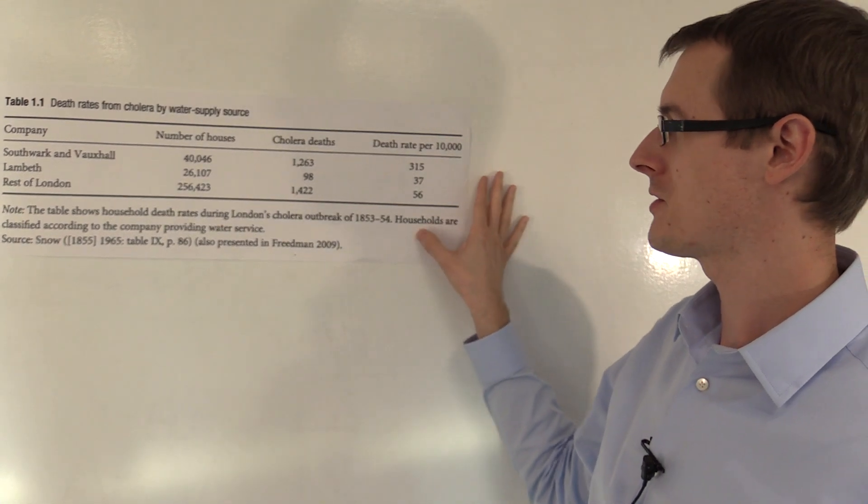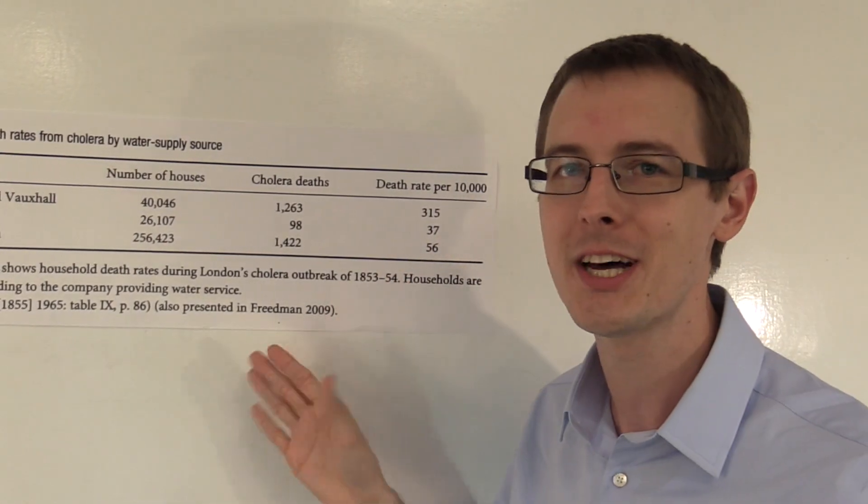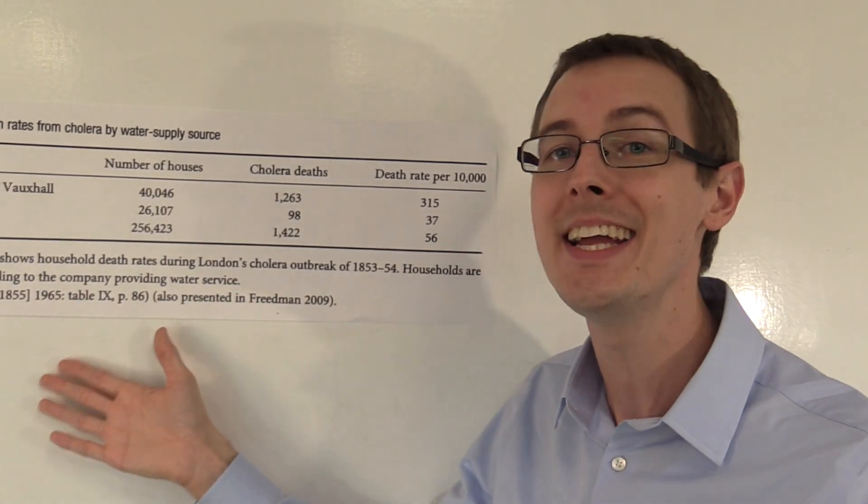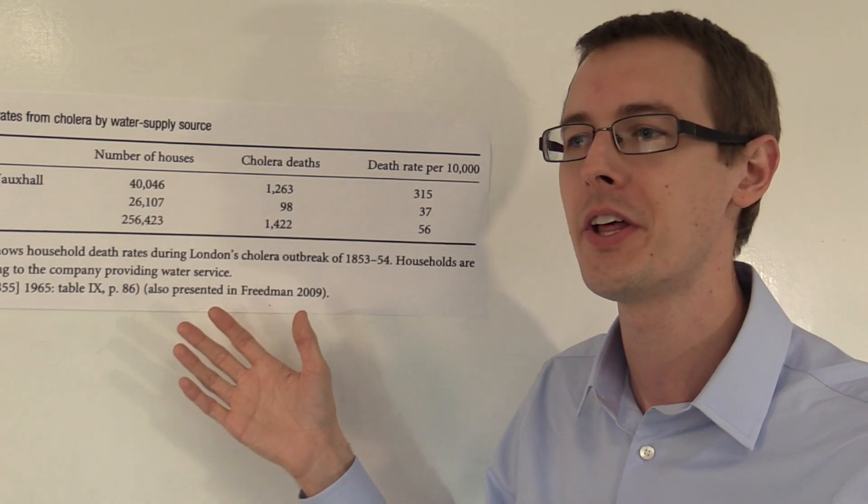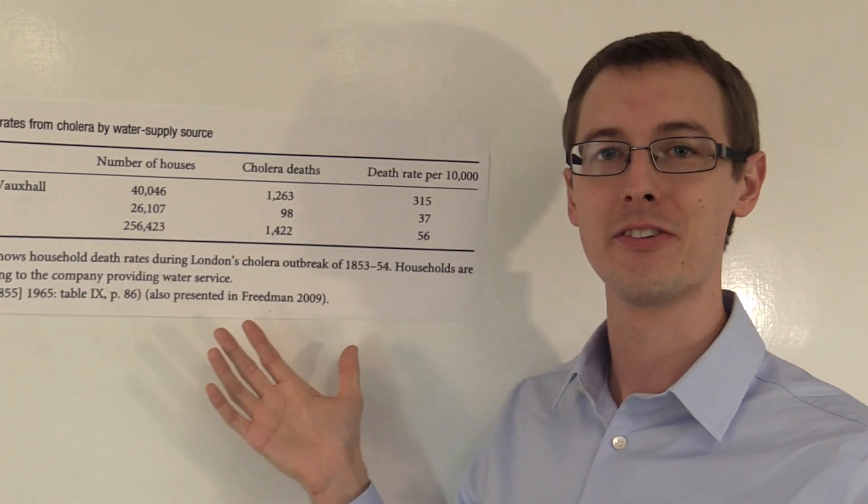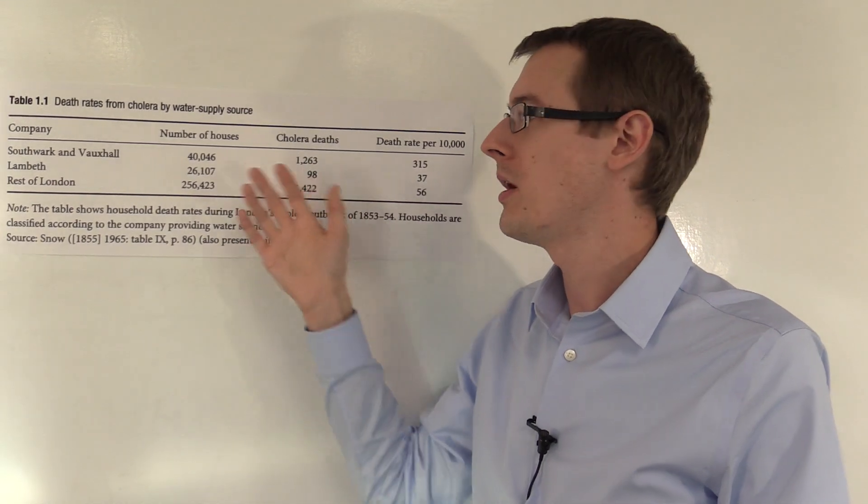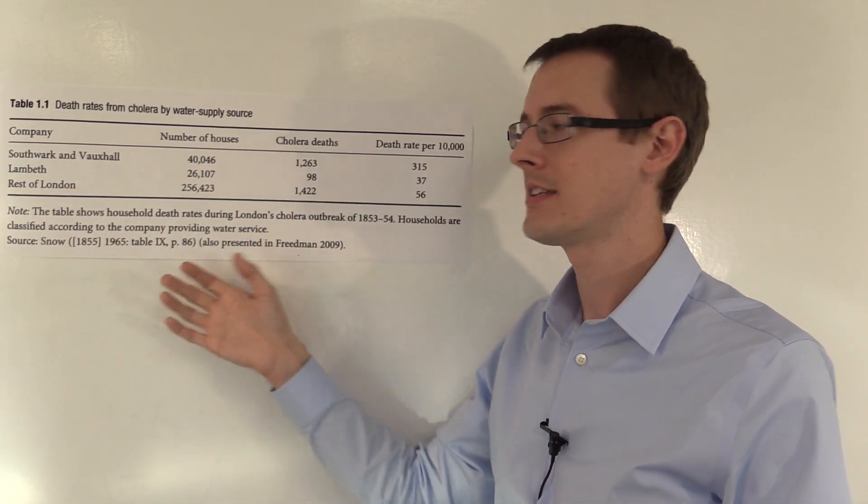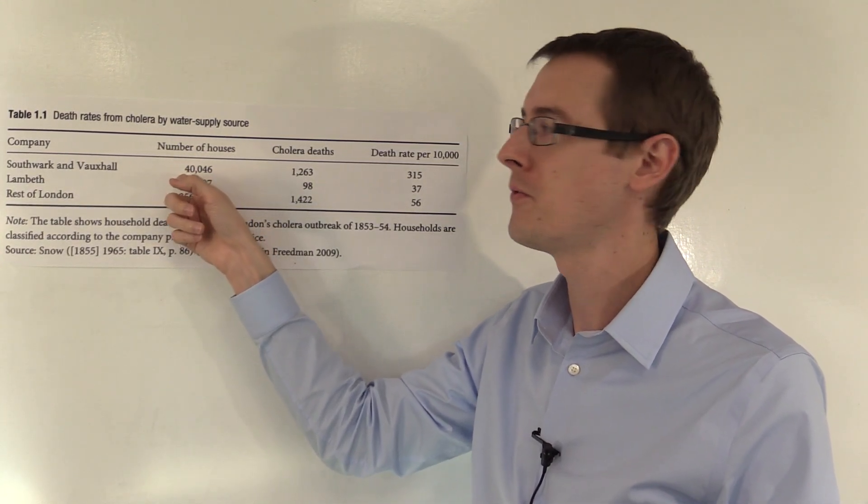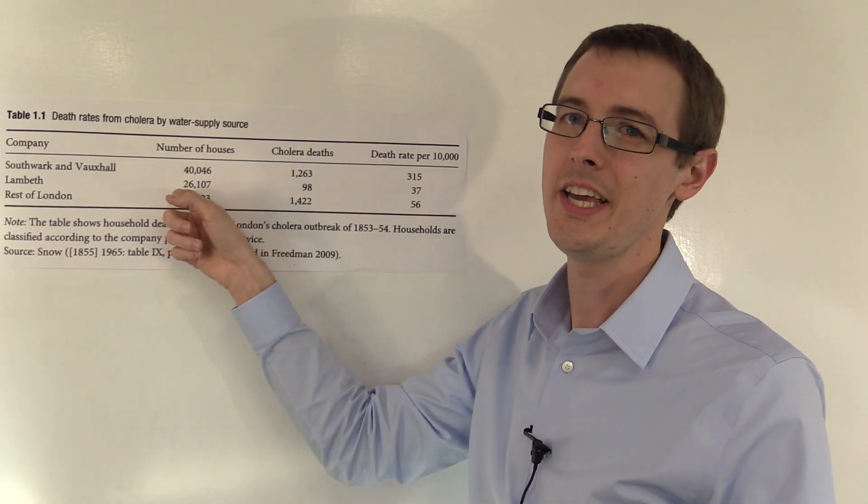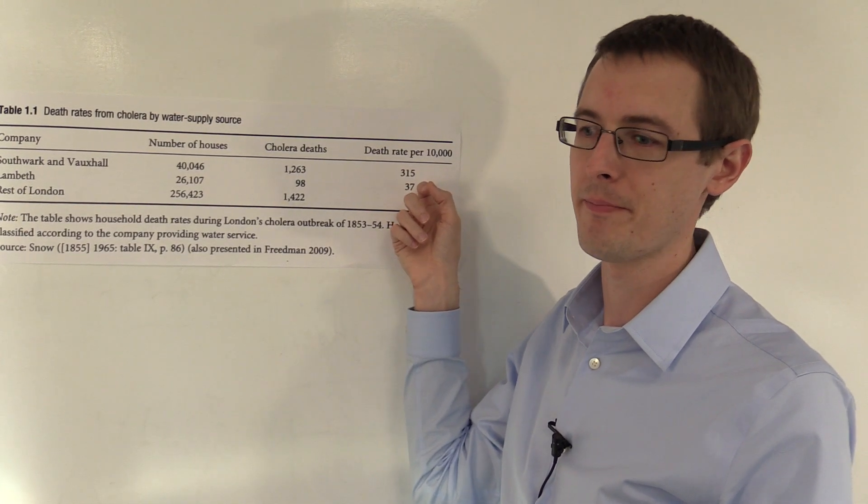By the way, I'll point out there's no standard errors, no confidence intervals, no p-values or anything in this table. Well, none of that stuff existed at the time. This is from 1855. P-values, confidence intervals, they wouldn't be invented for another 50, 60, 70 years. So, the whole idea of doing statistical inference was completely foreign to John Snow at the time. But it really didn't matter. The sample sizes are very large here, 40,000, 26,000. Even if you did that, this effect would be statistically significant.